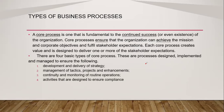We have to consider that in every process we do, there is a possible risk. In that way, we become vigilant and more careful with processes, eventually realizing the objective without problems. Now, here are the four basic types of core processes: one — development and delivery of strategy; two — management of tactics, projects and enhancement; three — continuity and monitoring of routine operations; and four — activities designed to ensure compliance.